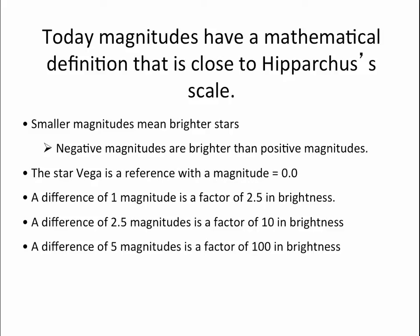The way the multiplication works out: a difference of two and a half magnitudes is a factor of ten, and the difference of five magnitudes is a factor of a hundred. I'm not going to ask you to do this mathematics — I just want you to know where it comes from and to know the basic scale that smaller numbers mean brighter objects.